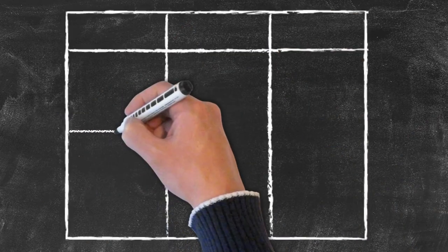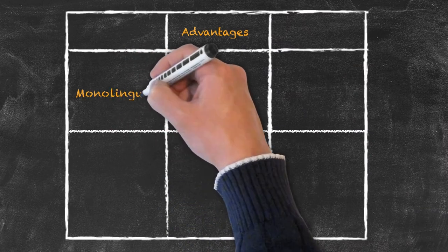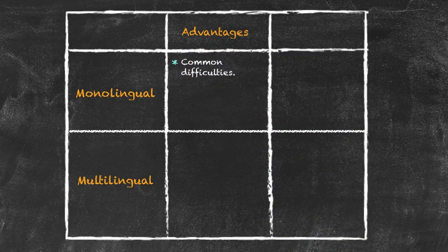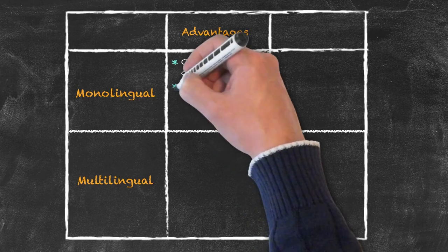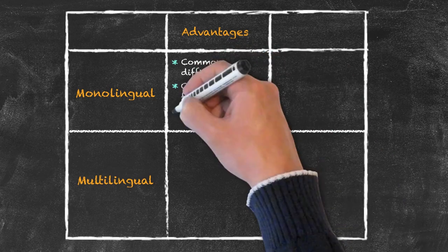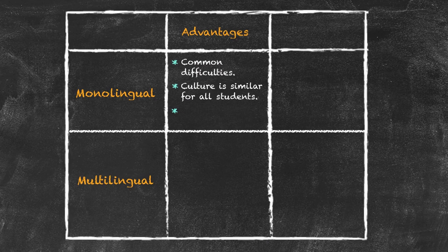Let's run through the advantages first for monolingual and multilingual classes. For a monolingual class, because they all come from the same country and speak the same language, they're going to have some common difficulties. This is an advantage to us as the teacher because we can work on those common difficulties with the whole class. Secondly, because they're all from the same country, they will be culturally similar. Another advantage is that they can actually help each other in their native language.